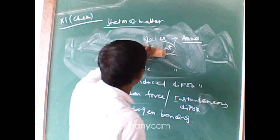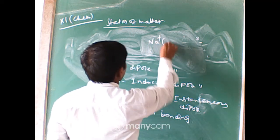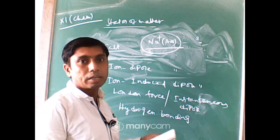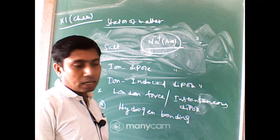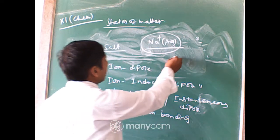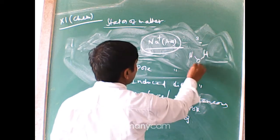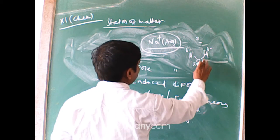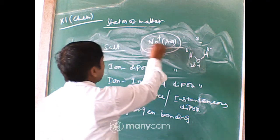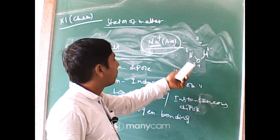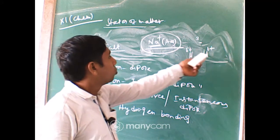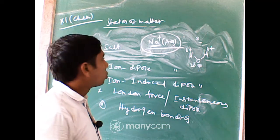When NaCl dissolves, it dissociates into Na⁺ and Cl⁻. Water itself is a dipole — with a δ− on oxygen and δ+ on hydrogen. The dipolar water molecule interacts with Na⁺ ions: the negative (oxygen) side faces the Na⁺, while the two hydrogen atoms point outward. This process is called hydration.